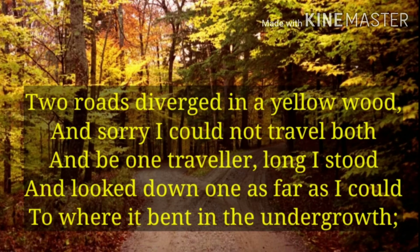Toh is poem ke is part ka surface meaning ye hai ki poet us din ki baat kar raha hai jab woh autumn season mein forest mein khada tha, aur wahaan pe usko ek diversion dikhai diya, aur woh confused ho gaya ki usko kis road ko travel karna hai. And he was the single person there, so he could not decide. Is liye woh kafi der tak wahaan khada raha, aur ek road ko usne bahut door tak dekha. Then he found ki woh road jo hai kuch undergrowth mein, bushes mein, shrubs mein wahaan pe turn ho rahi thi.